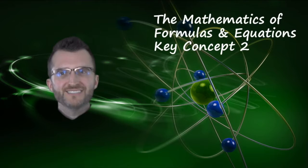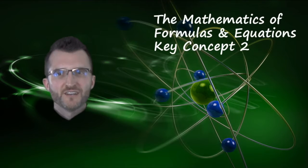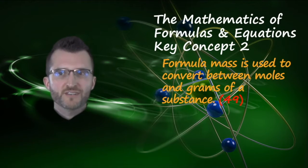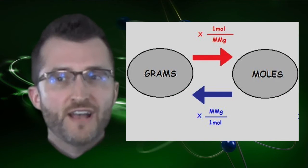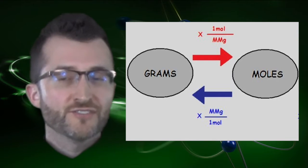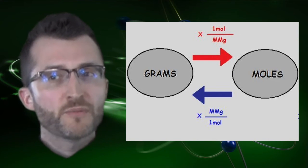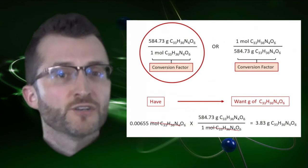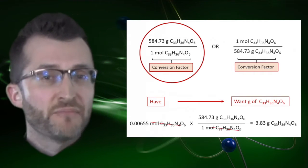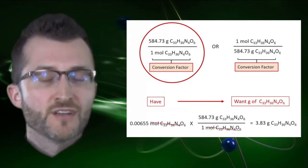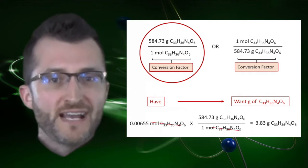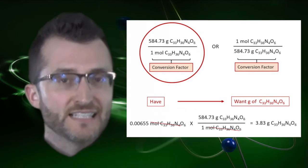The mathematics of formulas and equations key concept two: Formula mass is used to convert between moles and grams of a substance. When we are doing a conversion we have to decide what conversion factor we are going to use. Both conversion factors will involve the formula mass but where we put the formula mass might vary. For example, if we are converting between grams and moles, we are going to divide by the molar mass to cancel out grams and get moles at the end. If however, we are converting moles to grams, we are going to multiply by the molar mass to cancel out grams and get left with moles.